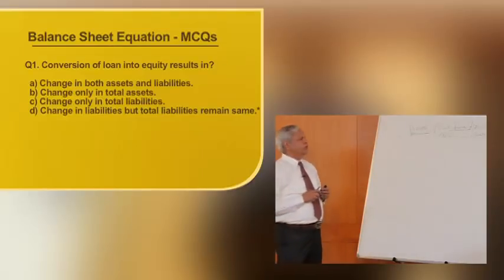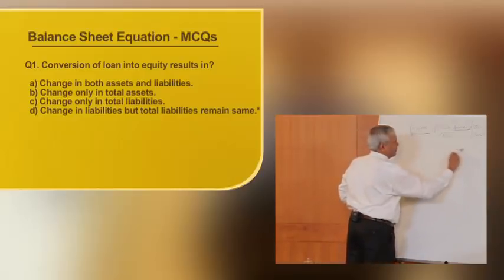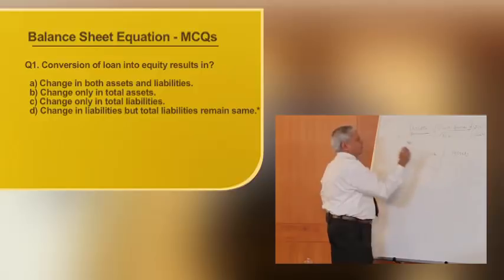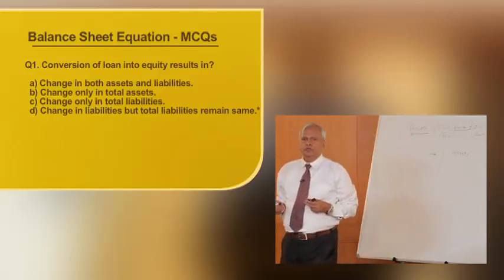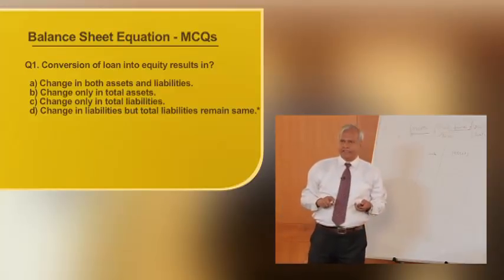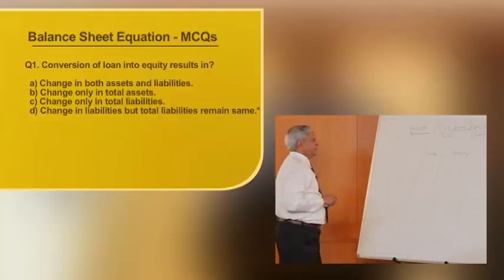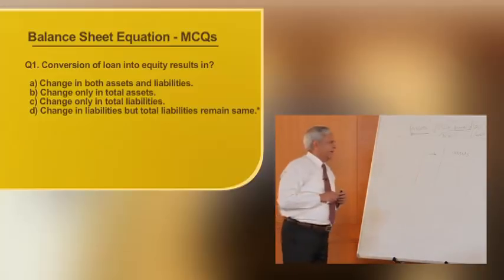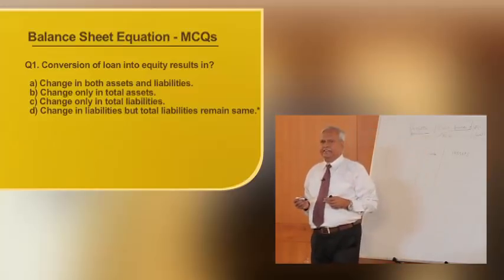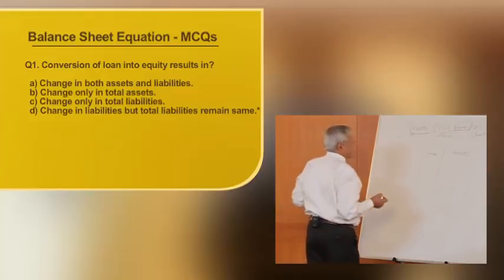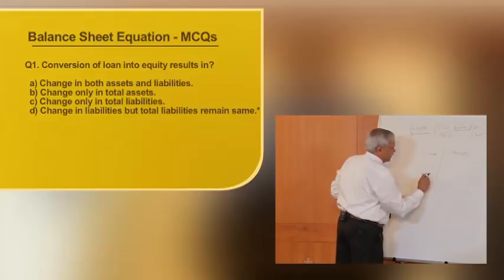The first question asks: what happens when a loan is converted into equity? These are the assets and these are the liabilities. How can such a situation arise? In case of a partnership firm, the partners may decide that rupees 10 lakhs which was a loan will now be treated as capital. Or in case of a company, this normally happens when the company becomes sick — the lenders decide that part of the loan will be converted into equity so that it becomes a viable enterprise and ultimately the money can be recovered. So what happens to the loan and what happens to the equity or capital — which is part of the net worth?